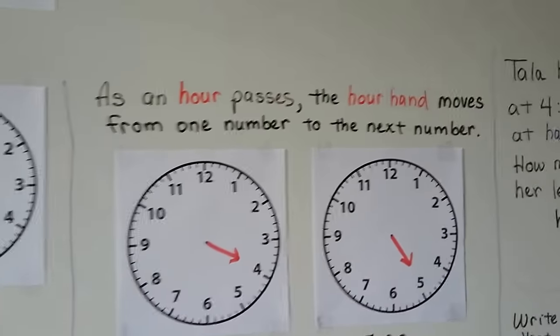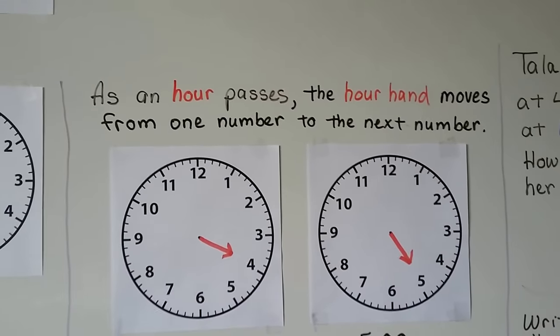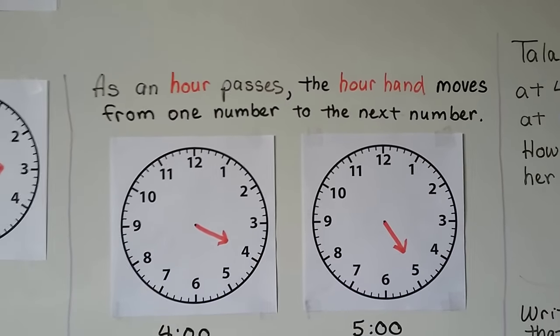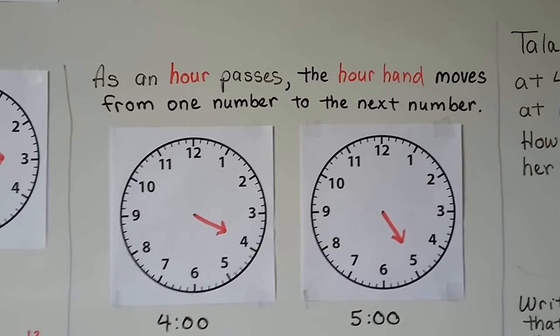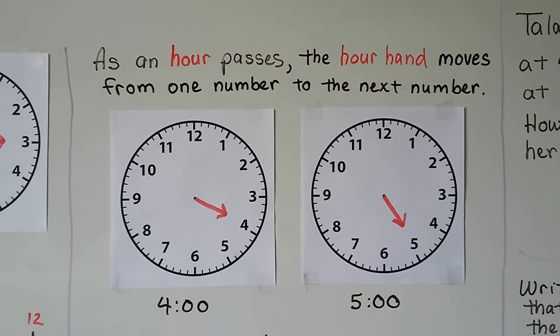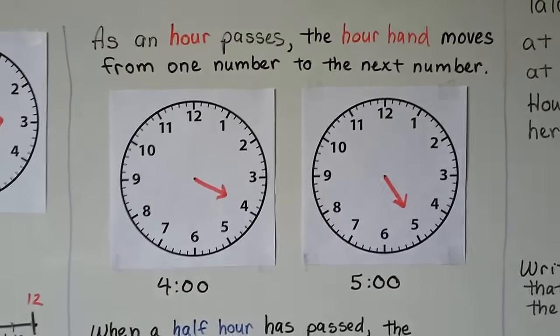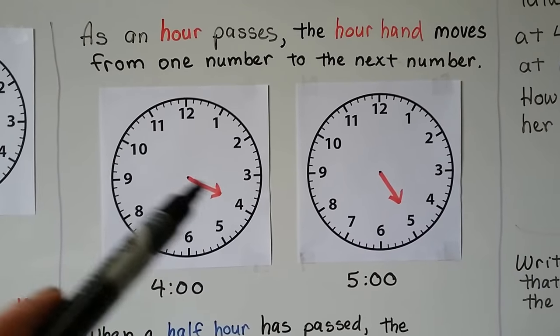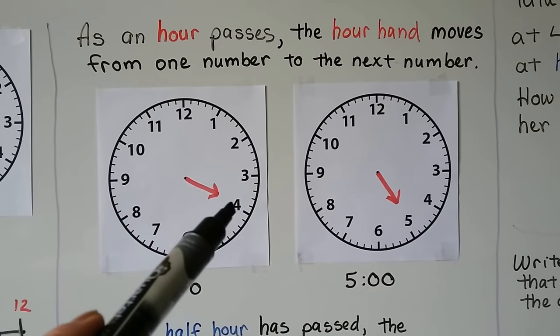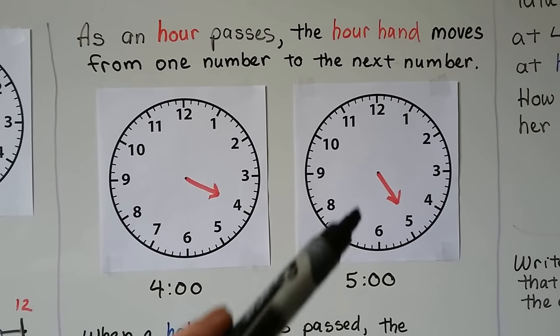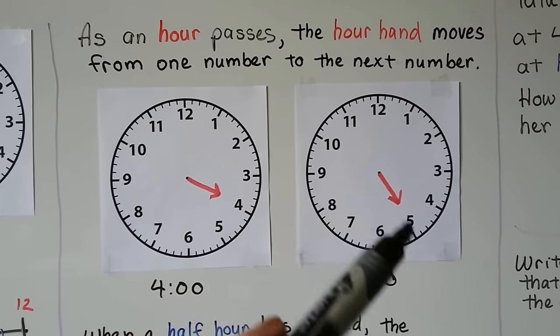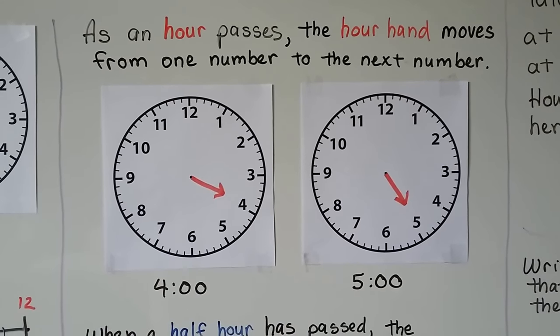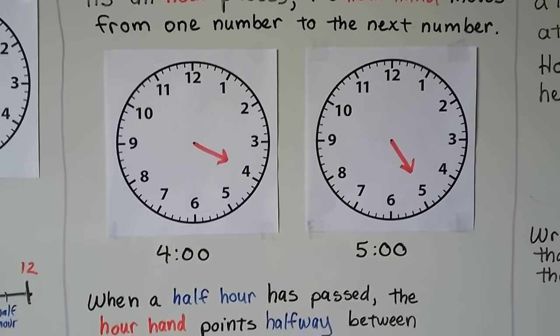As an hour passes, the hour hand moves from one number to the next number. Here we have four o'clock — the hour hand is pointing to the four. Here we have five o'clock — the hour hand is pointing to the five.